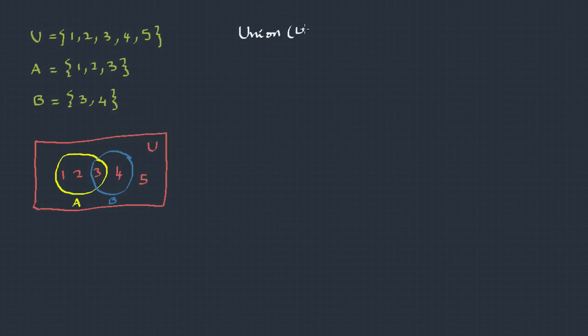The first operation we're going to perform is union. A union B is the set of all elements of set A as well as set B. In predicate notation, A union B is x such that x belongs to A or x belongs to B.